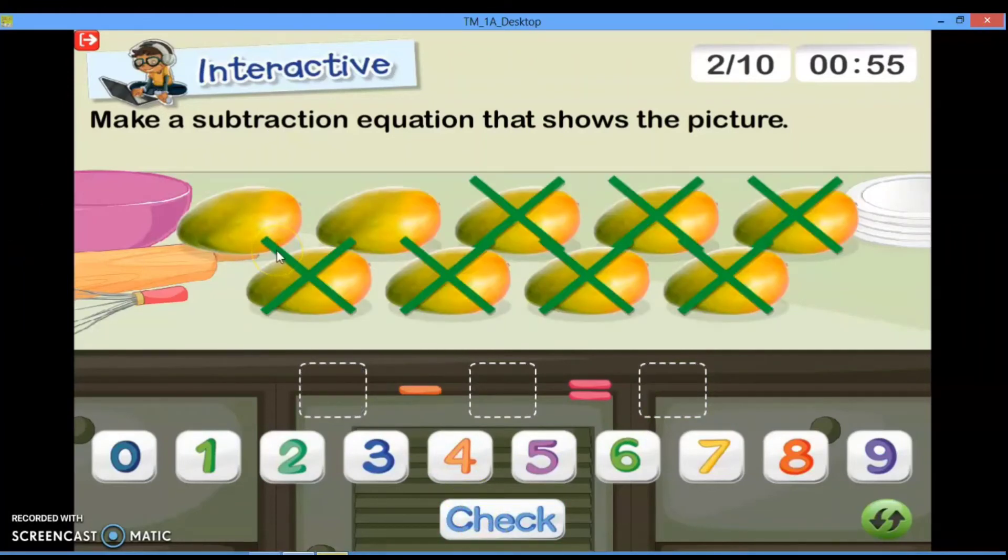Nah, sekarang di sini ada mango. Mango, coba kita hitung dulu ya jumlah seluruhnya. One, two, three, four, five, six, seven, eight, and nine. Jadi, there are nine mangoes.